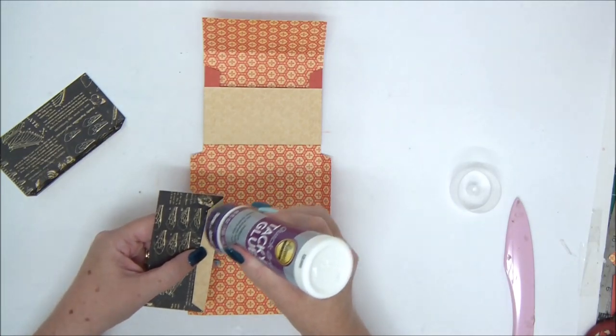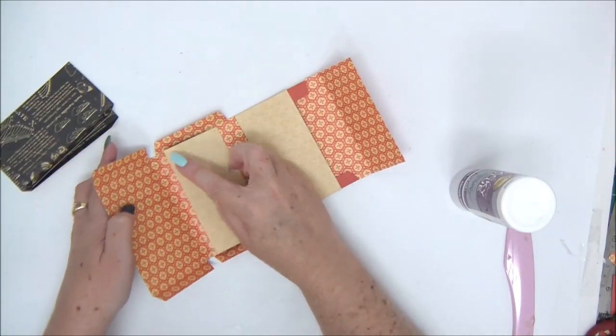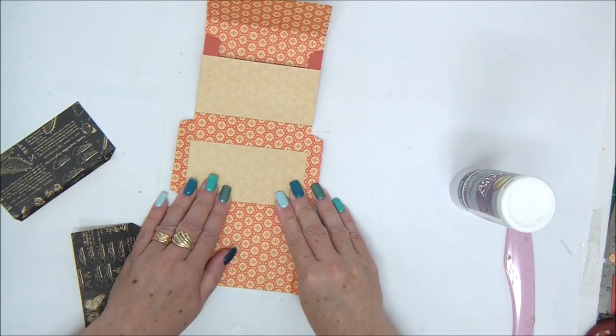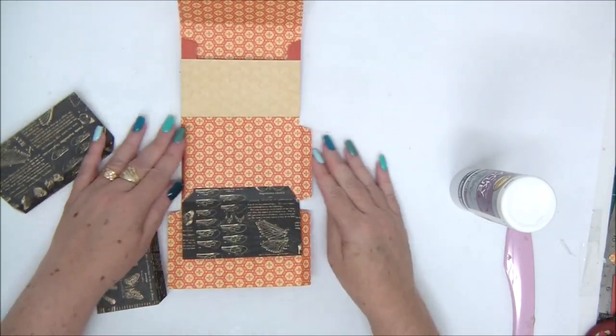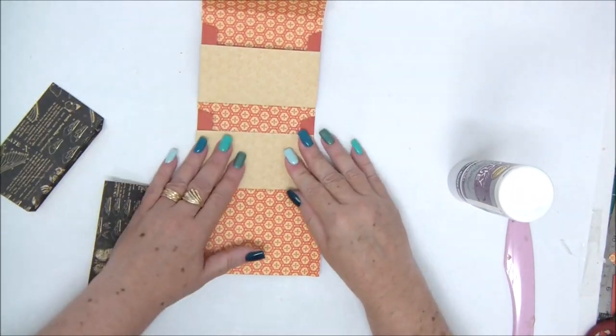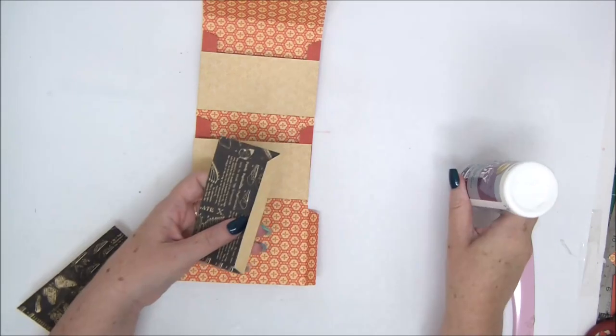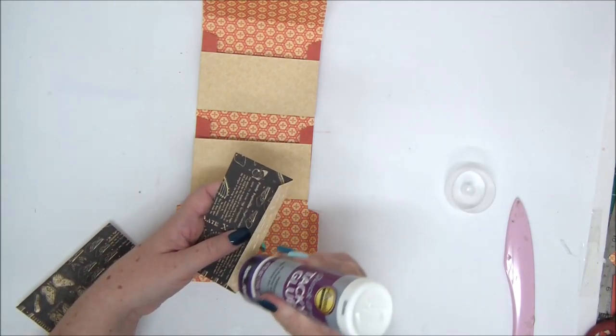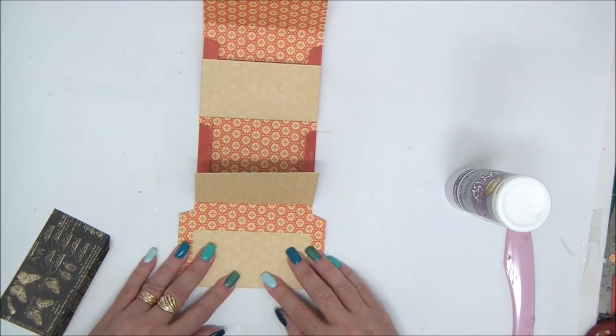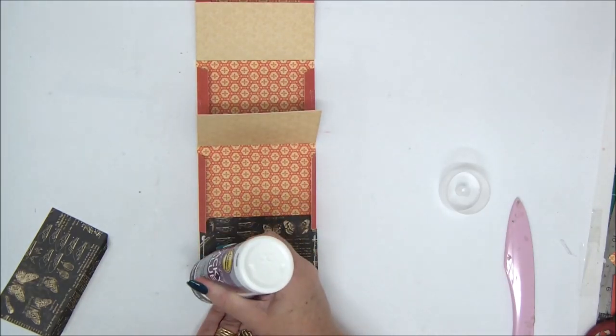We're going to do the exact same thing with the other two pockets. Apply the glue, align it with the fold line, and then make sure it's centered. Fold the flaps on the side in, apply glue to the sides, and attach. This way we have two pockets. For the third pocket, we're just going to do the exact same thing and align it with the bottom edge.